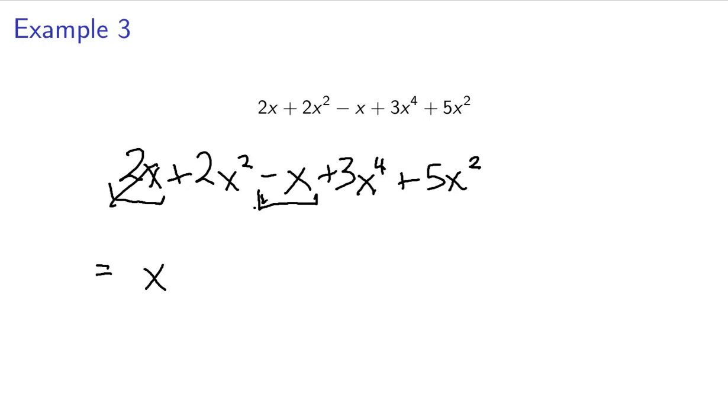So I see are there any other, oh cross those out because I'm done with them. Are there any other x squared terms? Well, there's this 5x squared. Positive 2 and positive 5 make positive 7x squared. And I'm done with those. This is the only term left, it's the only 3x to the fourth term. So plus 3x to the fourth.